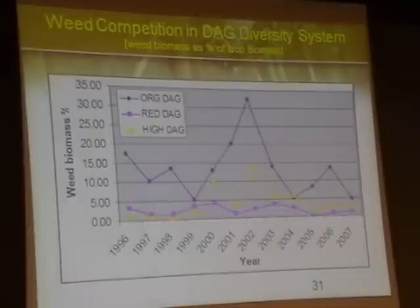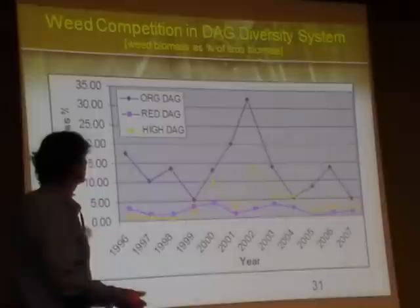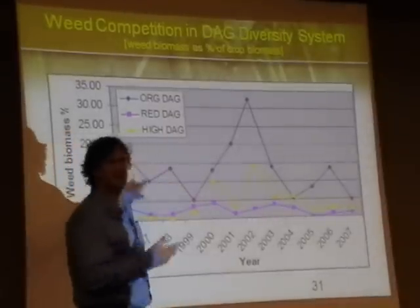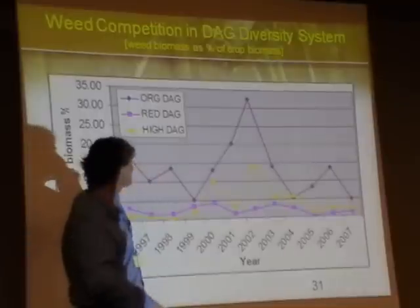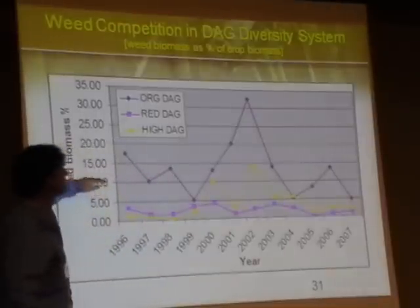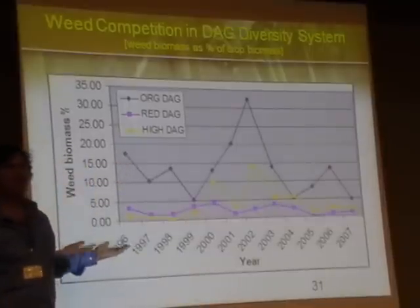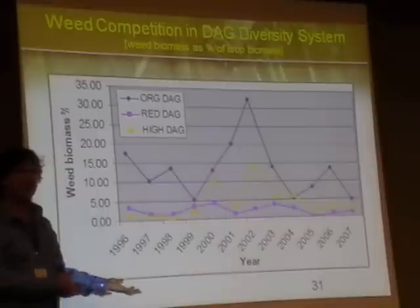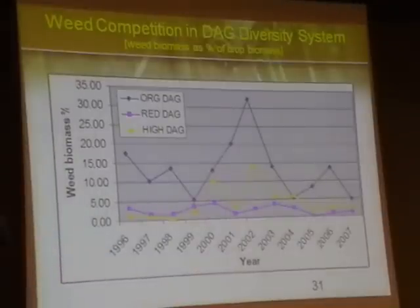Similarly, in the diversified annual system where we have a diversified rotation, the organic rotation is a bit more — because we don't have as much fallow, as much tillage — we're seeing it bump up, but most of the time it's at or around 10%, which is certainly tolerable. 10% of your biomass being weeds is not a big deal. You can live with that.